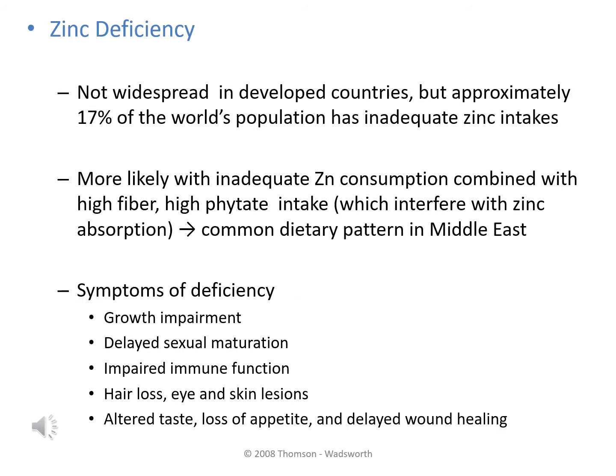Zinc deficiency is not widespread in developed countries, but it is estimated that 17 percent of the world's population has inadequate zinc intakes. Countries most affected are in the Middle East, where diets tend to be low in zinc and high in fiber and phytates — the same compounds that decrease iron absorption — found predominantly in grains, legumes, and seeds that are staples to diets in that region. Symptoms of deficiency can include growth impairment, delayed sexual maturation, impaired immune function, skin lesions affecting the eyes and hair, altered taste, loss of appetite, and delayed wound healing.